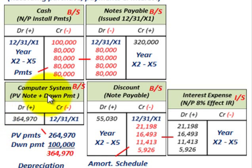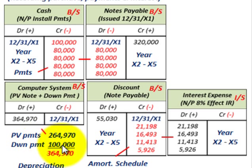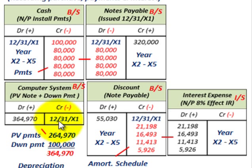To recap the capitalization: the present value of the four payments was $264,970, plus the $100,000 down payment, giving the $364,970 capitalized amount. Note that depreciation is not shown here — the computer system would need to be depreciated over its useful life less any salvage value. We're only covering the purchase, the payments, and the interest charges.